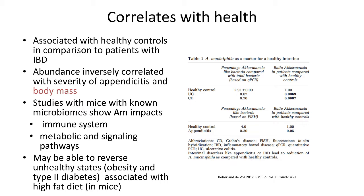Akkermansia muciniphila correlates with good gut health. Patients with known gut perturbations such as Crohn's disease and irritable bowel disease have a much lower percentage of Akkermansia muciniphila in their gut. Studies with mice indicate that Akkermansia muciniphila impacts immune system functioning and metabolic and signaling pathways. The addition of Akkermansia muciniphila has also been shown to reverse unhealthy effects of a high-fat diet — mice fed a high-fat diet that often become obese and develop type 2 diabetes show mitigation of these conditions when Akkermansia muciniphila is present as a probiotic. It may be possible someday to develop gut microbiome transplants that can reverse obesity, type 2 diabetes, or even heart disease. The future is sure to be exciting in this field.